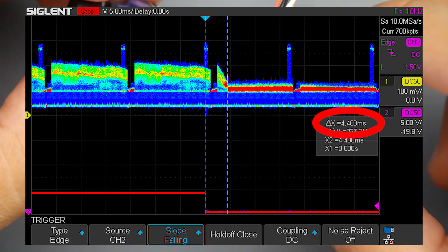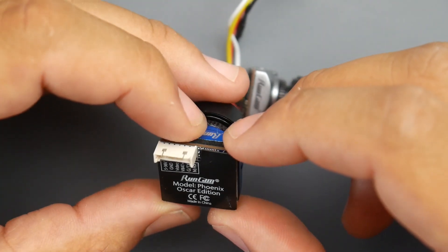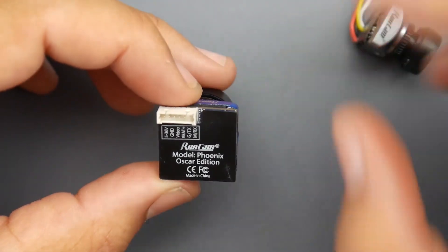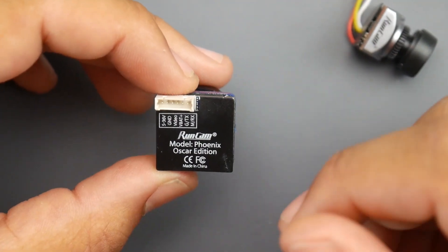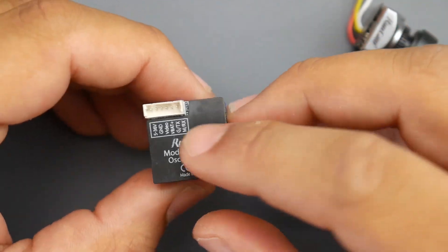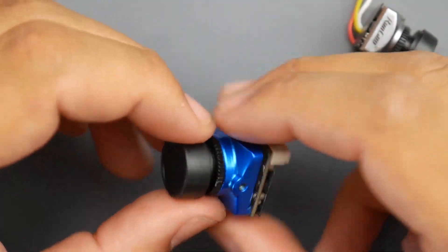However this one only takes 5 volts and there's no extra features. For example this one has the VBAT so it can give you the OSD information. You can also control the OSD of the camera itself through the Betaflight OSD. You also do have a UART right here which is a really nice addition.